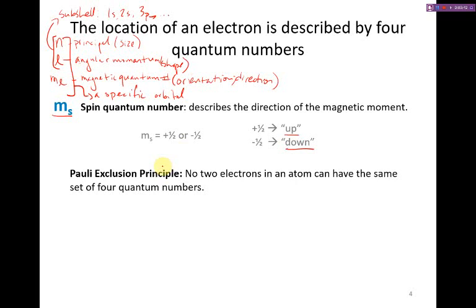And this brings us to what is called the Pauli exclusion principle. The Pauli exclusion principle states that no two electrons in an atom can have the same set of four quantum numbers.